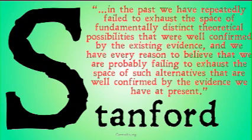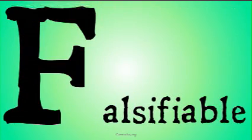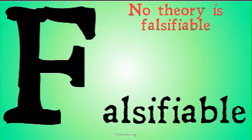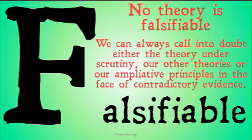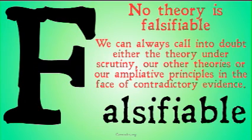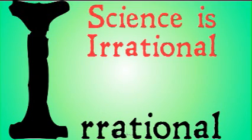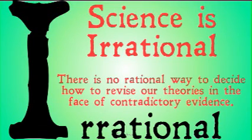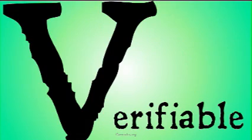To sum up everything we've talked about in this video series: we've shown that no theory is falsifiable. We can always call into doubt either the theory under scrutiny, or our other theories, or our ampliative principles in the face of contradictory evidence. Science, as a method, is irrational. There's no rational way to decide how to revise our theories in the face of contradictory evidence.